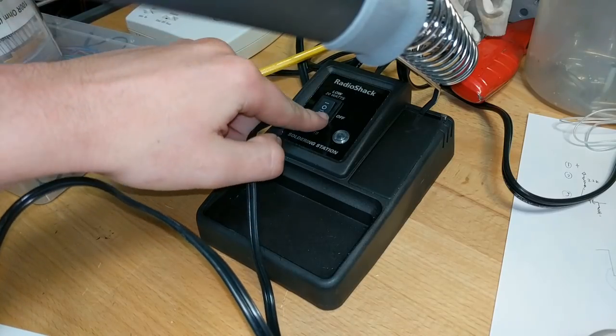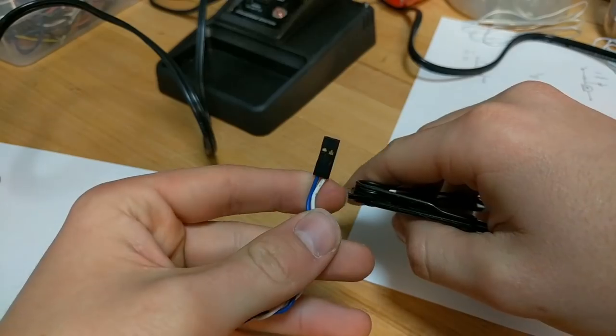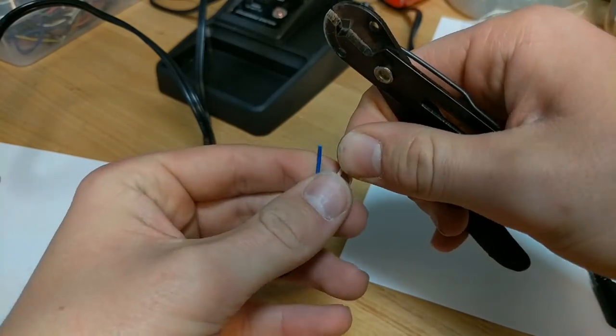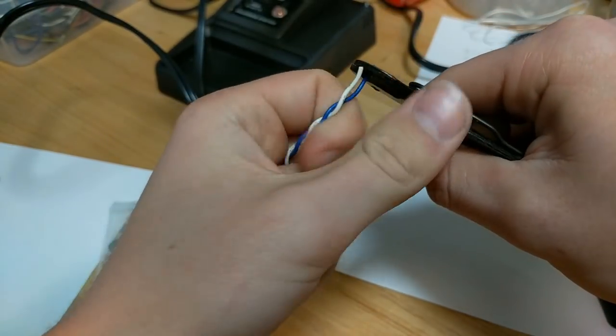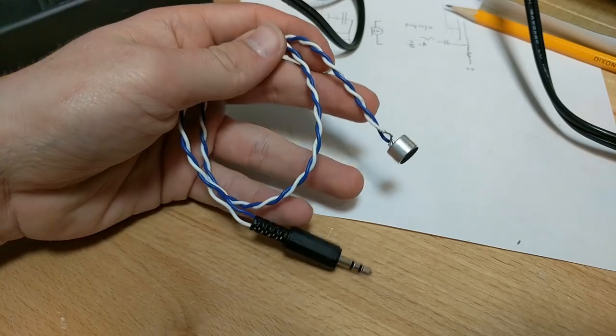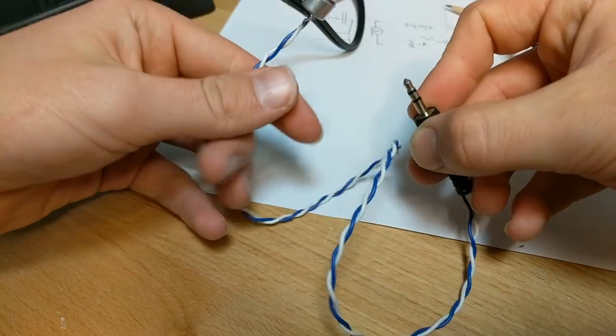Alright, let's solder this thing together. Fire up the soldering iron, full power. Let's take this cord, cut it off, and prepare it for soldering. There it is, the microphone is done.